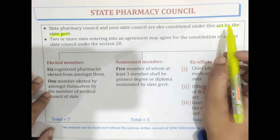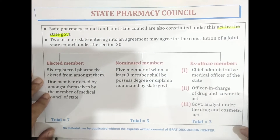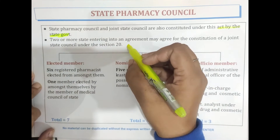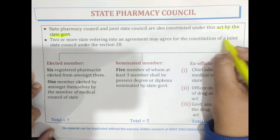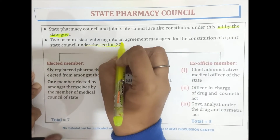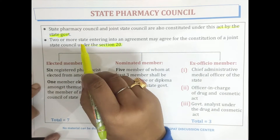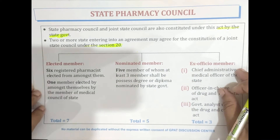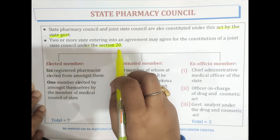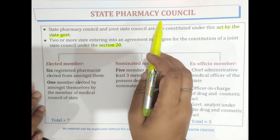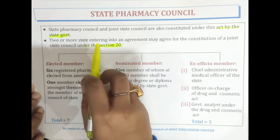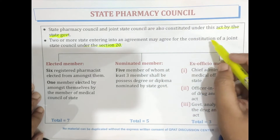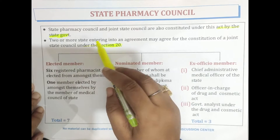The next important key point is that two or more states entering into an agreement may agree for the constitution of a Joint State Council under Section 20. So two or more states may agree for the constitution of a Joint State Council, as opposed to the individual State Pharmacy Council.